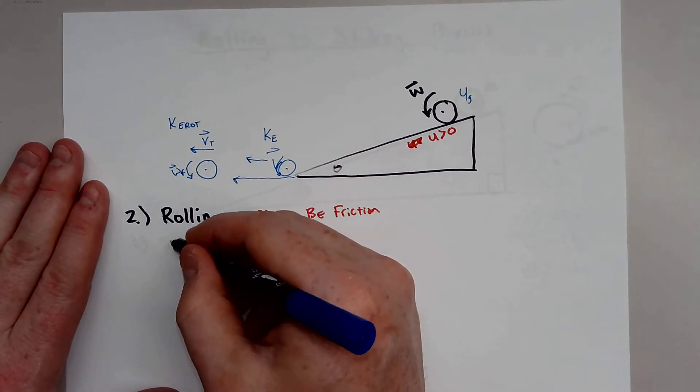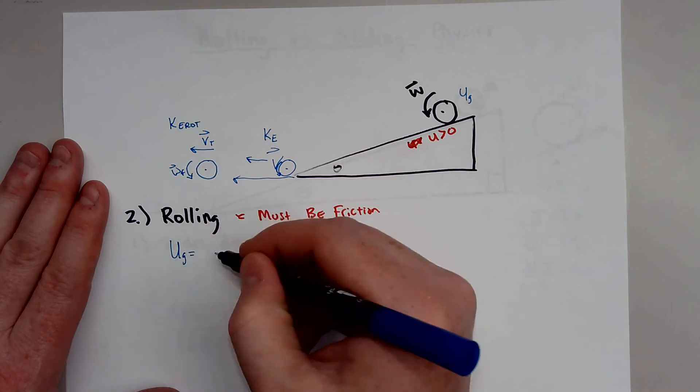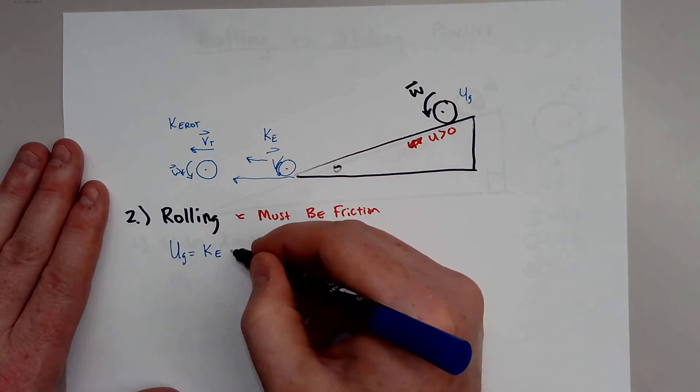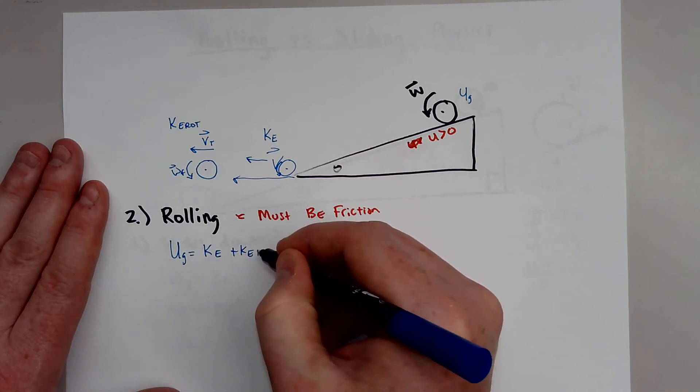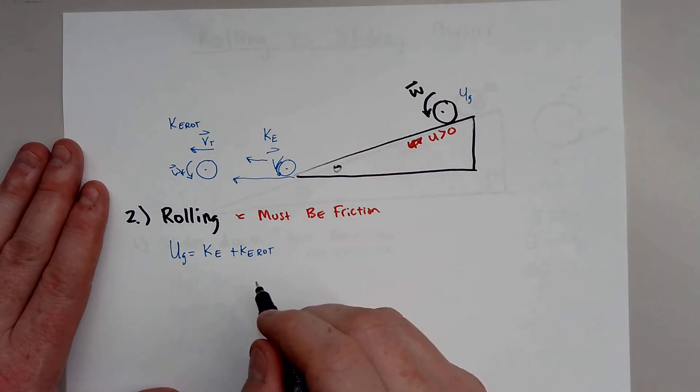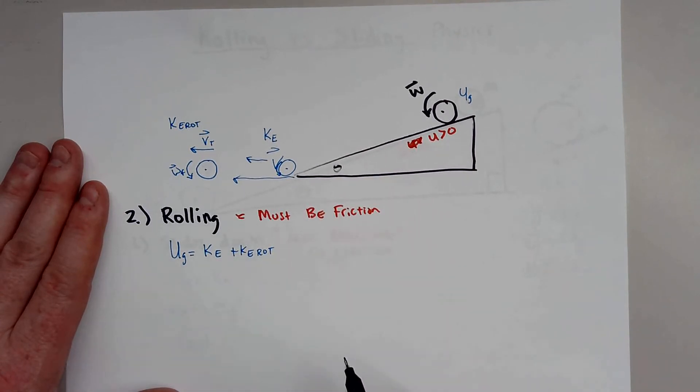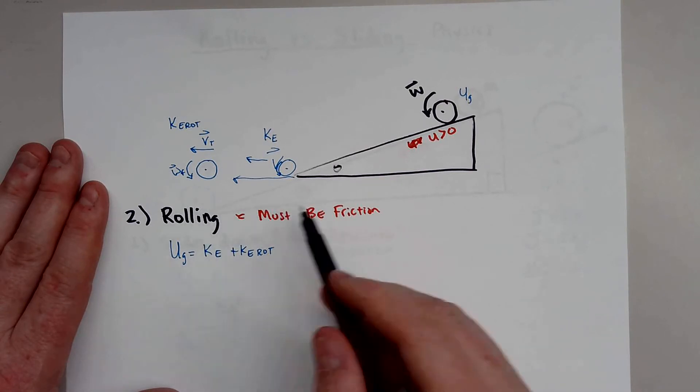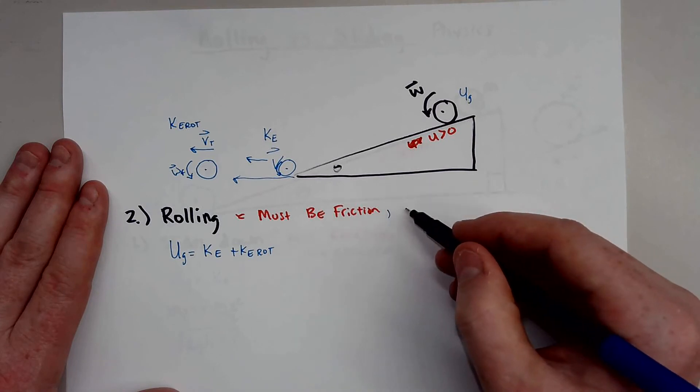So if you do this, we know you'd have potential energy at the top is equal to kinetic energy at the bottom plus your kinetic energy of rotation. So we also call this KE rot or rotation. And so what that means is your object will actually be going slower. So in rolling, there must be friction, and the object will be going slower.